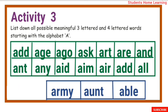Activity 3: List down all possible meaningful 3-lettered and 4-lettered words starting with the alphabet A. The 3-lettered words include: add, age, ago, ask, art, are, and, any, aid, aim.